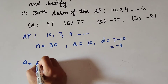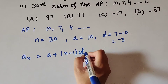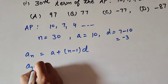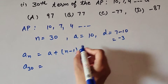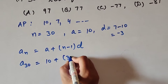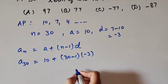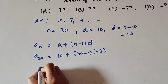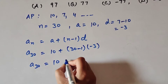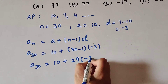We know the formula to find the nth term of an AP: aₙ = a + (n − 1)d. So a₃₀ equals a plus (n − 1) times d. Here a is the first term, which is 10; n is 30; and d is the common difference, which is minus 3. So a₃₀ = 10 + (30 − 1) × (−3).